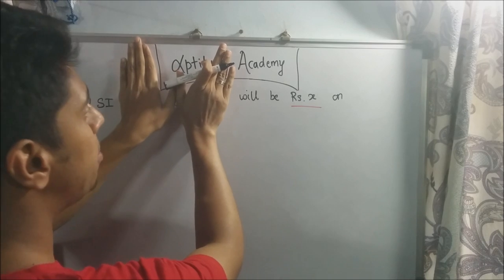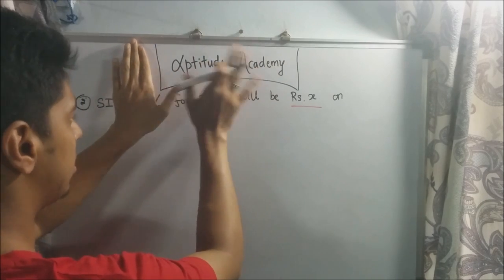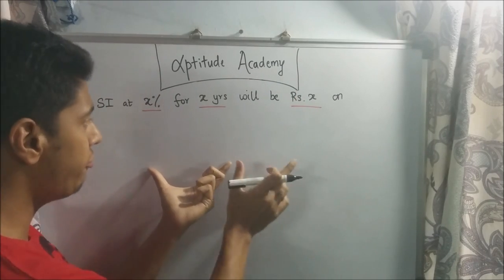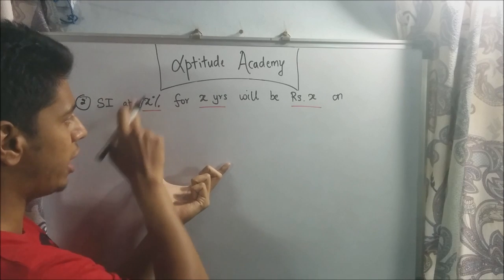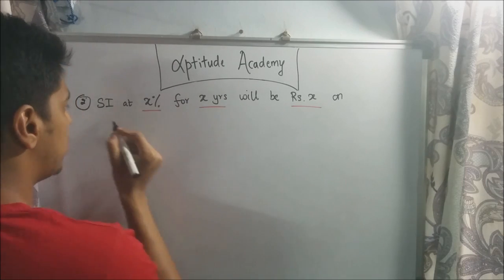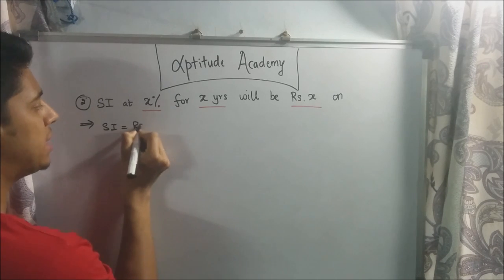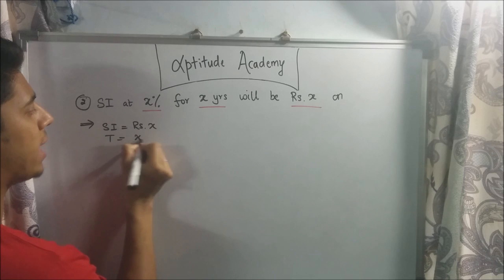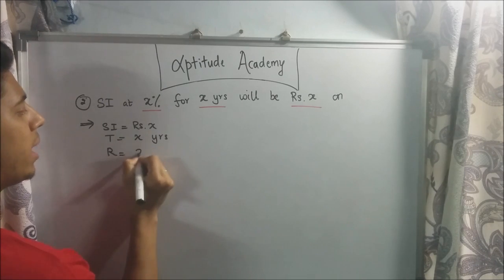If you cover the last part, you see 'SI will be rupees x on' — so rupees x is the simple interest. It's the simple interest on some principal amount, put in at x percent rate of interest for x years. So SI equals rupees x, time equals x years, and rate equals x percent.